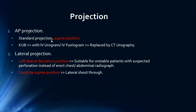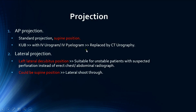There are two main projections. The AP projection is the standard, done in the supine position — in contrast to chest radiographs where PA standing is standard. A subtype of AP projection is KUB (kidneys, ureters, and bladder), used to visualize the urinary system, though air-containing bowel can obscure the kidneys, so it is often done with IV contrast as an IV urogram or pyelogram.